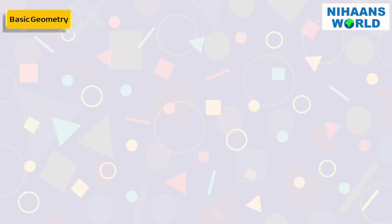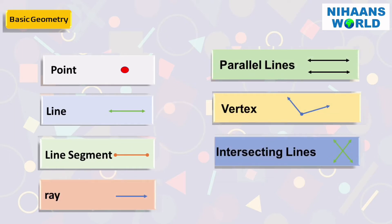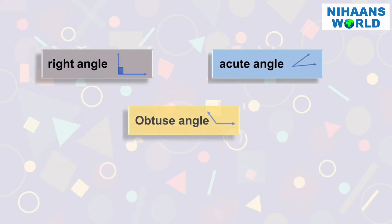Today we will learn about the following Geometry: Point, Line, Segment, Ray, Parallel Lines, Vertex, Intersecting Lines, Perpendicular Lines, Right Angle, Acute Angle and Obtuse Angle.